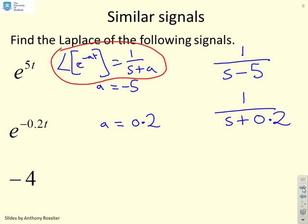What about minus 4? Well, clearly minus 4 is minus 4 times a unit step. Now, the Laplace of a unit step was 1 over s, so the Laplace of minus 4 times a unit step will be minus 4 over s. So again, you see how straightforward this is once you understand the key results.